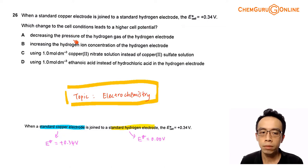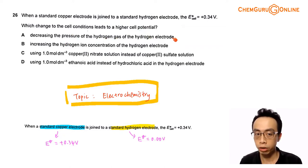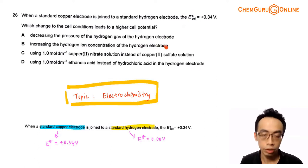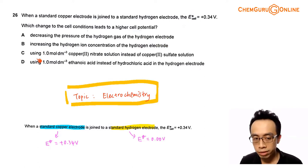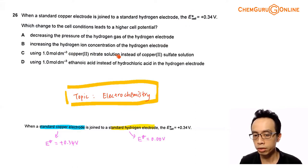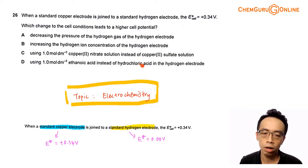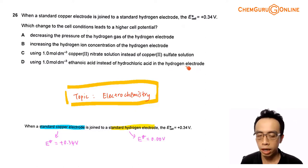Option A: decreasing pressure of the hydrogen gas of the hydrogen electrode. Option B: increasing the hydrogen ion concentration of the hydrogen electrode. Option C: using 1 mol per dm³ copper-2 nitrate solution instead of copper-2 sulfate solution. Option D: using 1 mol per dm³ ethanoic acid instead of hydrochloric acid in the hydrogen electrode.